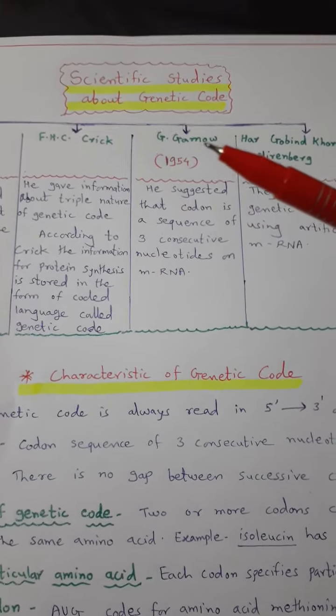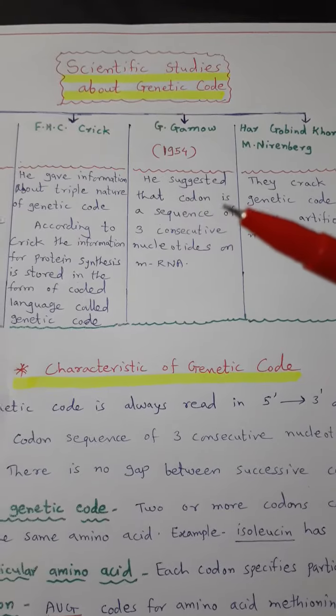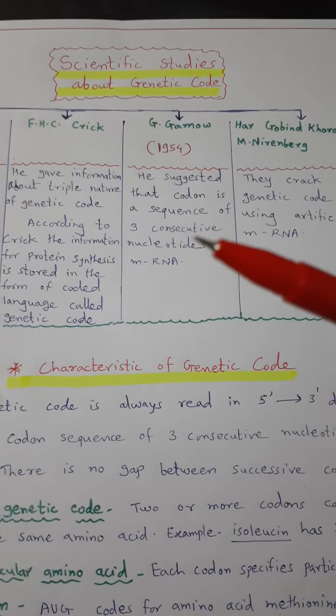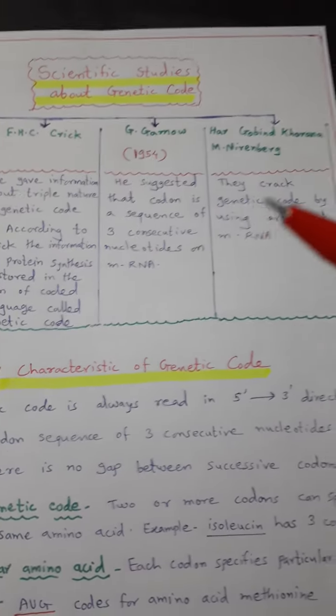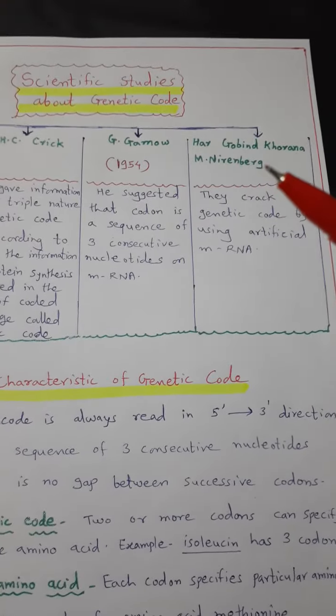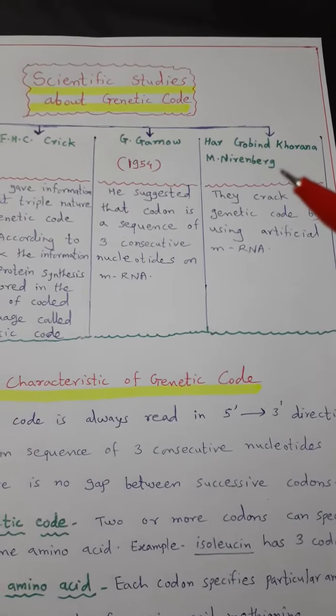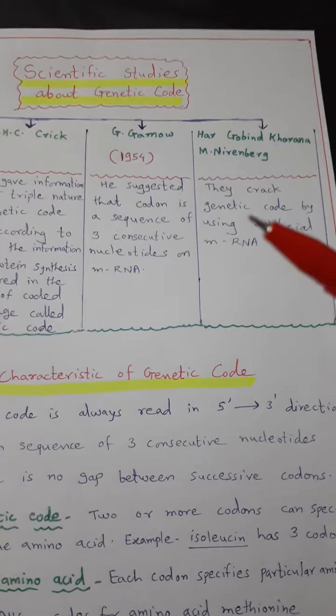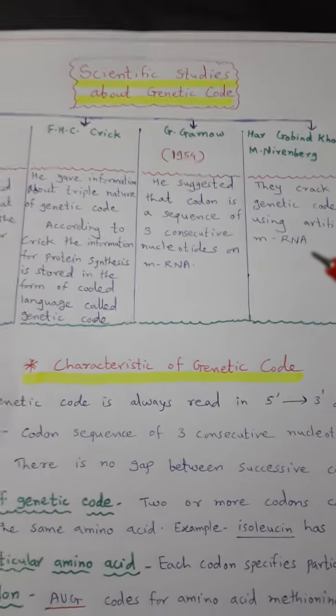Gamow in 1954 suggested that codon is a sequence of 3 nucleotides. Har Gobind Khurana and his team cracked the genetic code by using artificial mRNA.